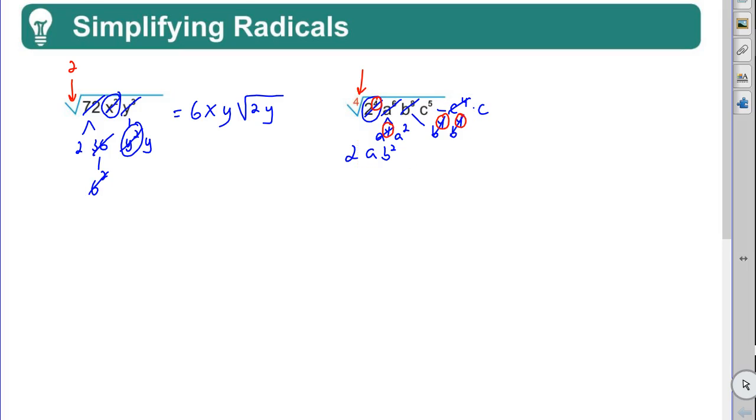And so now I'm at the place where I've got 2ab squared c, and whatever else is left is left in the radical. Don't forget your index - it's a 4. Alright, I have an a squared left in, and I have a c. So what is the answer? 2ab squared c times the 4th root of a squared c.